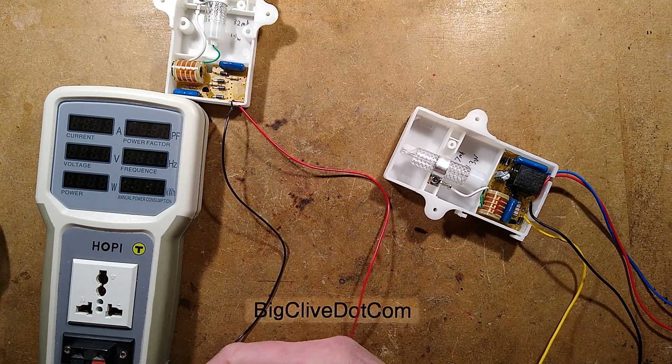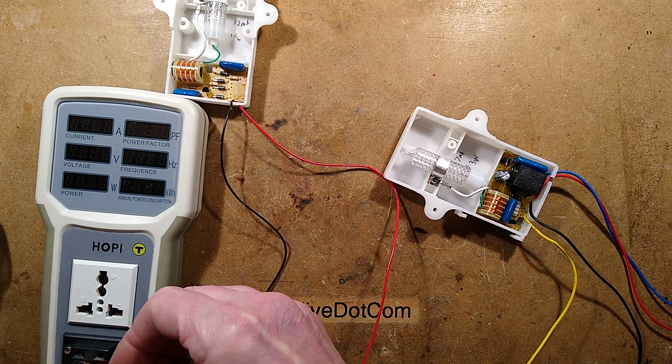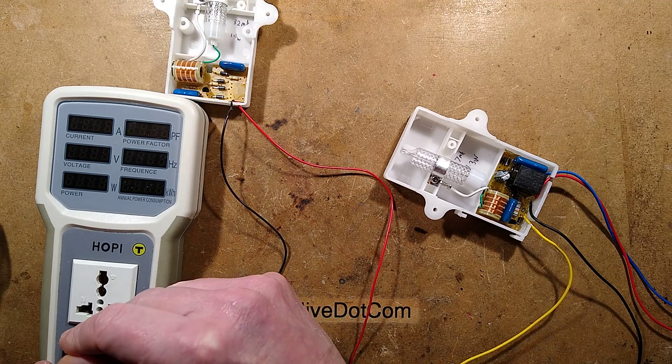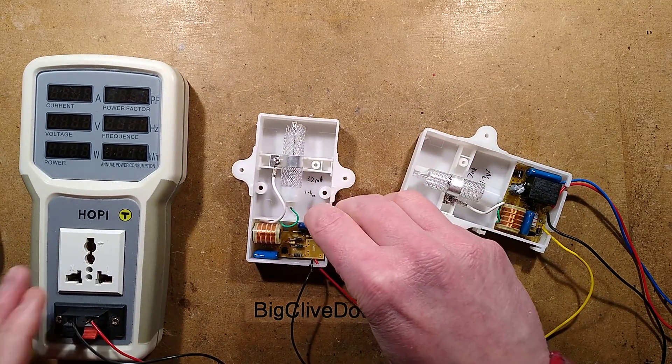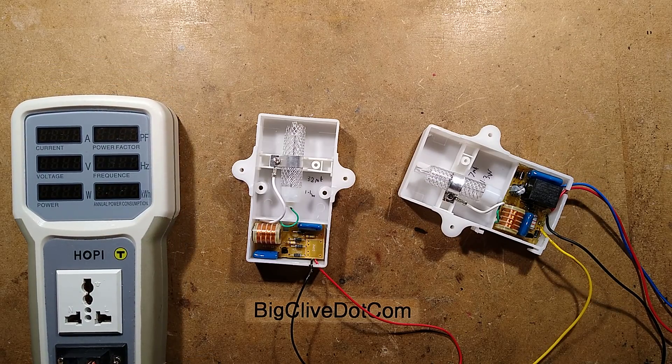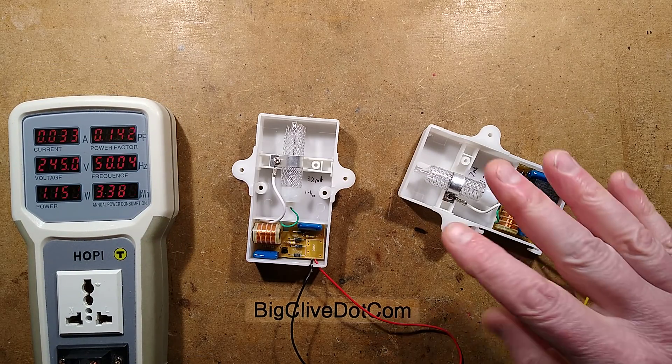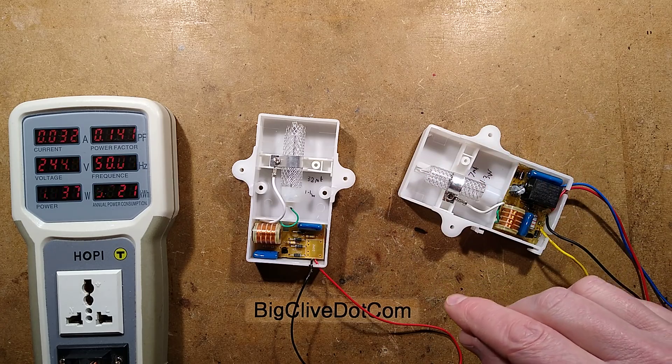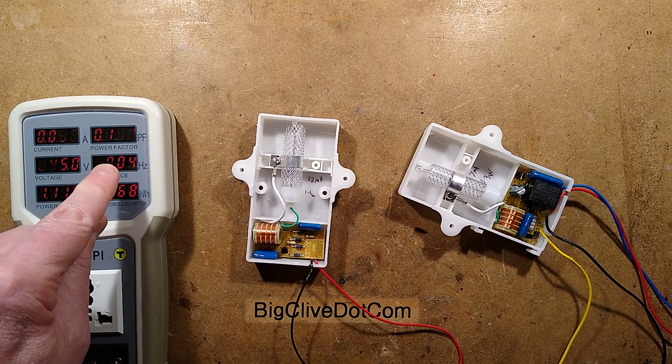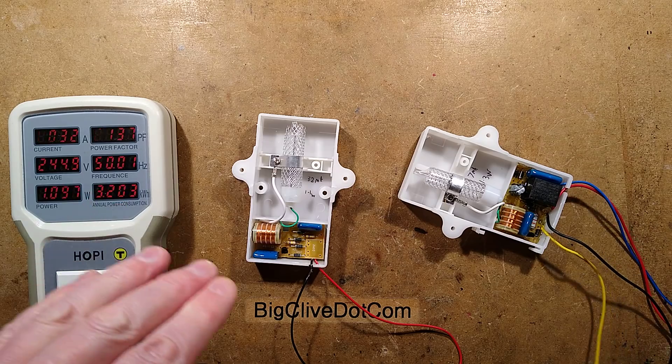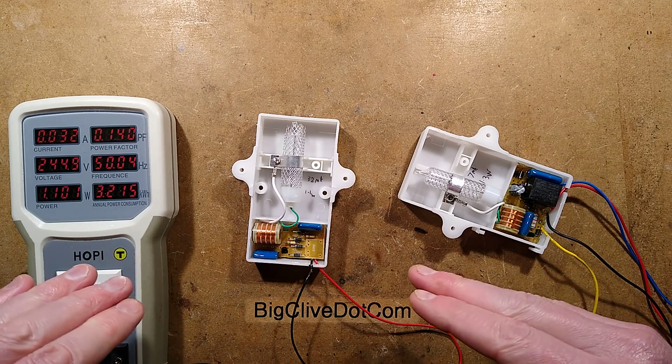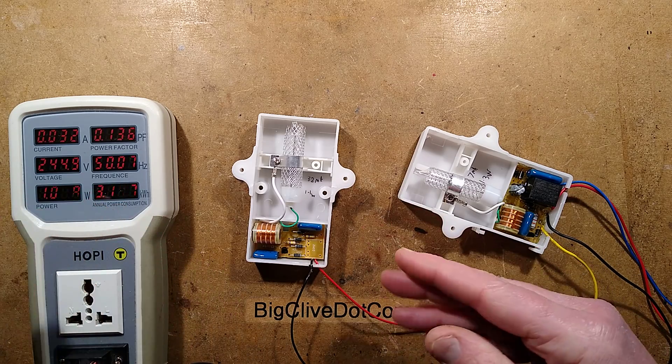I shall now power up this one and you'll hear that it sounds completely different so I'm just stuffing the wires into these non-compliant terminals. Bring this down into view here and you can hear it's much higher pitched. The reason for that is it appears to be firing on both half waves and the power factor here suggests that the voltage in the circuitry is only active for a very small part of the sine wave.